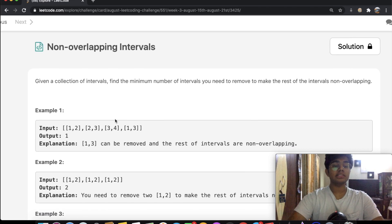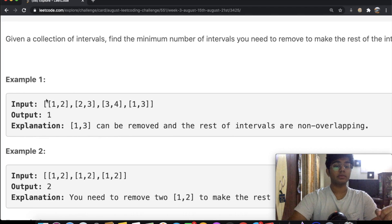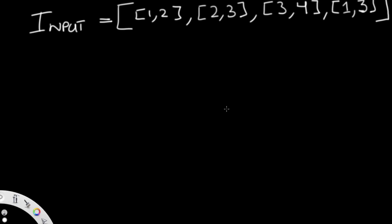To understand this question, let's look at this example. Our input is: [1,2], [2,3], [3,4], and [1,3]. What [1,2] means is that it starts at 1 and ends at 2. We can think of each number as a time — let's draw a timeline with 1, 2, 3, and 4, where each number represents one hour.